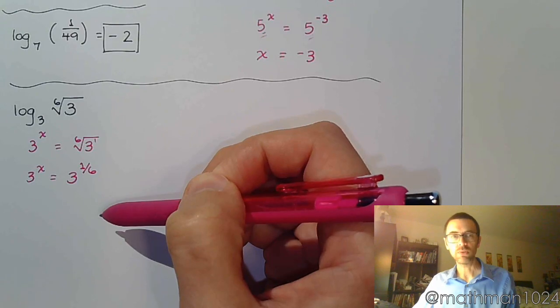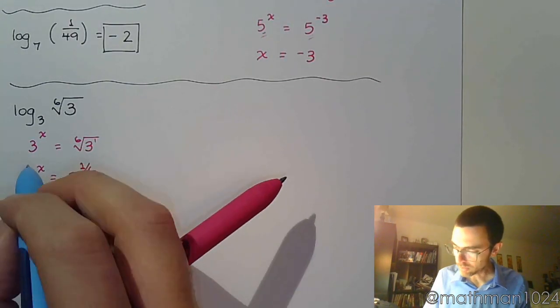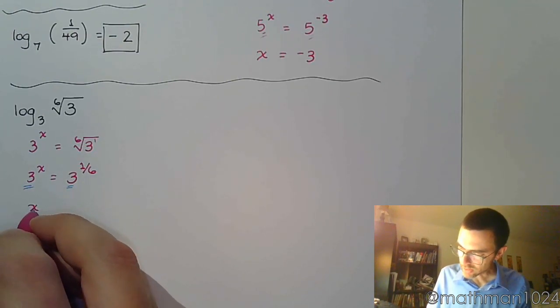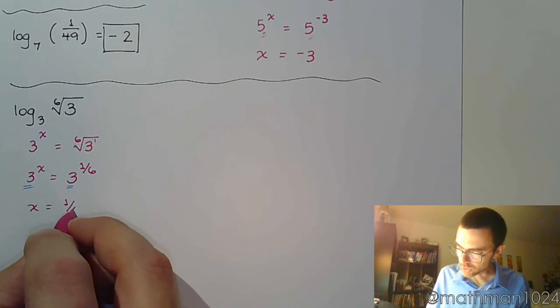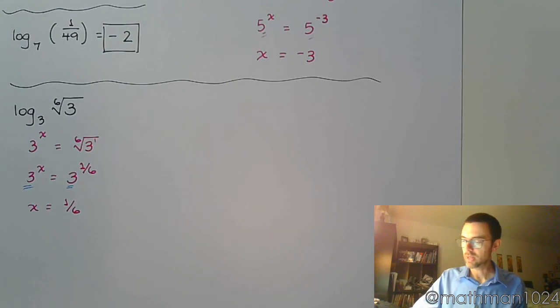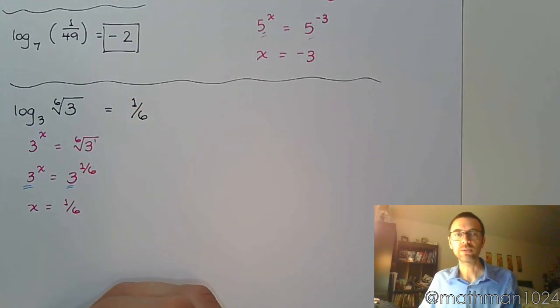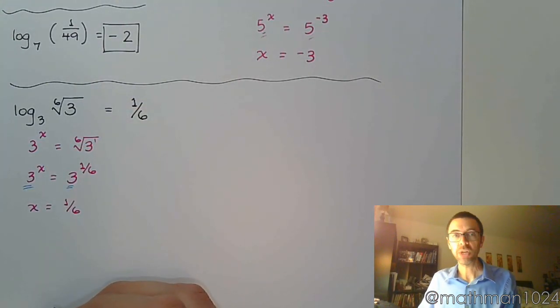And there you go. Since these bases are now the same, they're both 3, then we can say that x is equal to 1 over 6. And that's what this logarithm is equal to, 1 over 6. Not too bad, right?